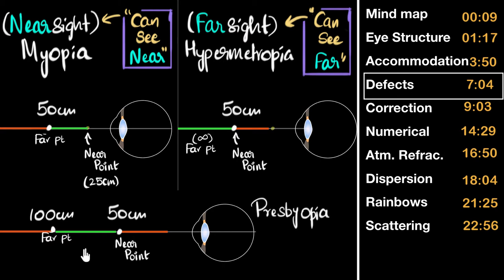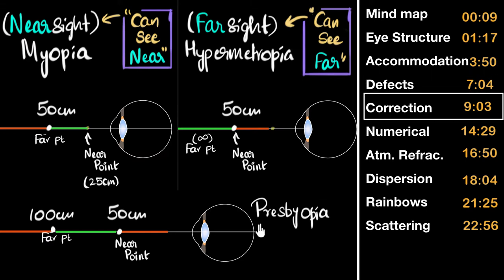If a person has problems seeing both far away objects and close objects — meaning both their far point and near point have been shifted — we say they have presbyopia. This usually happens with old age, and this brings us to the correction of these defects.